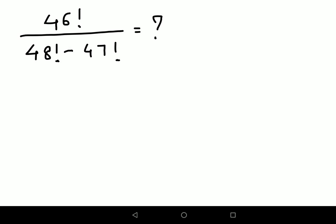Welcome everyone. Today we're going to solve a nice factorial problem. The question is 46 factorial divided by 48 factorial minus 47 factorial equals what. Here what I can do is I can very well write this 48 factorial in terms of 47 factorial.